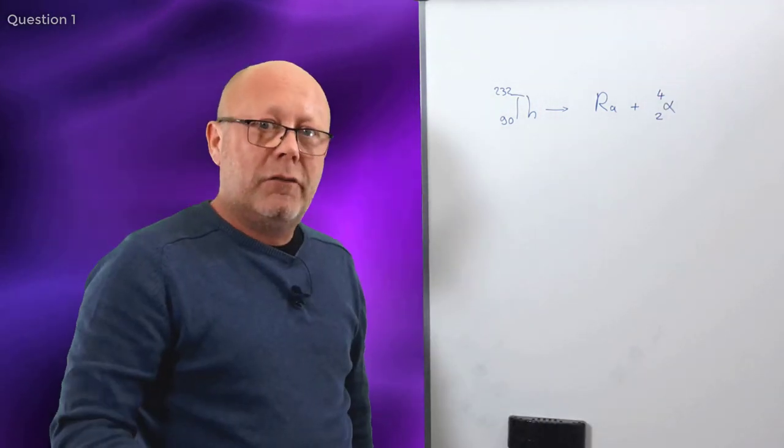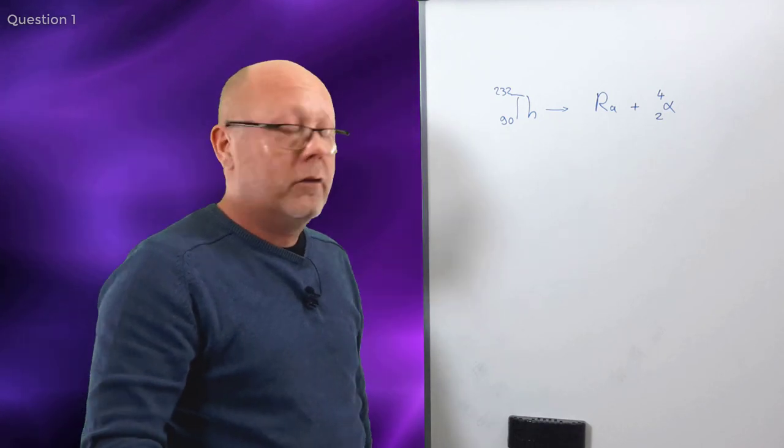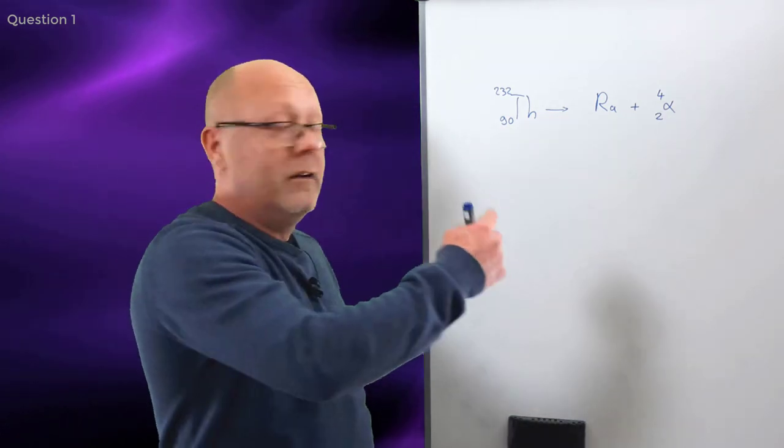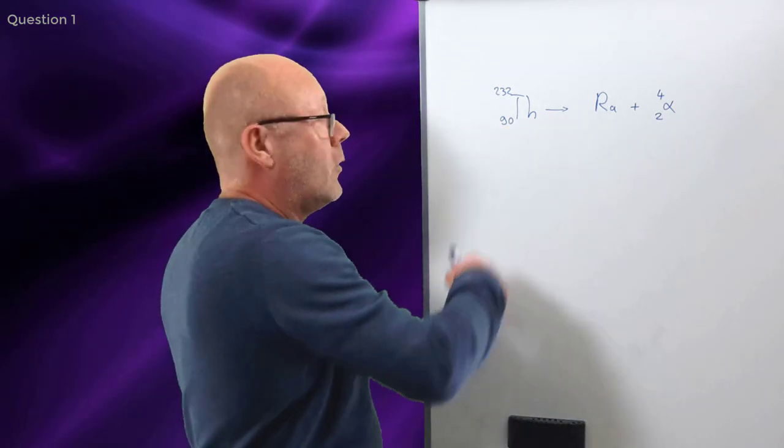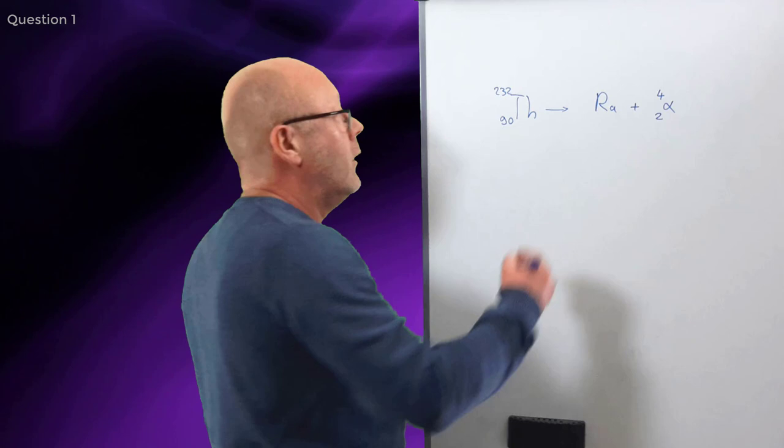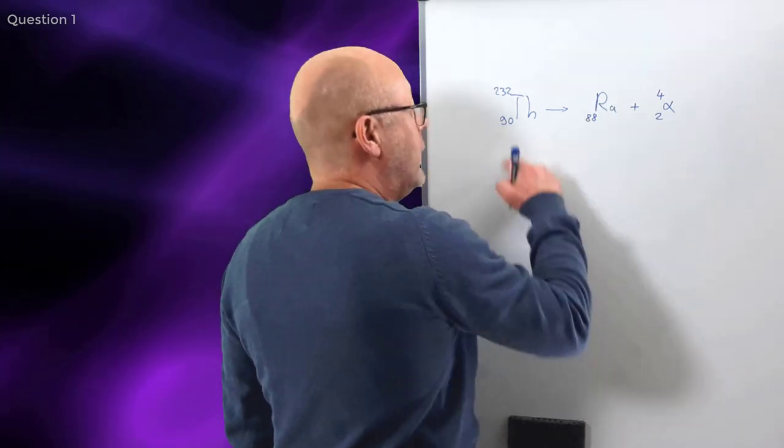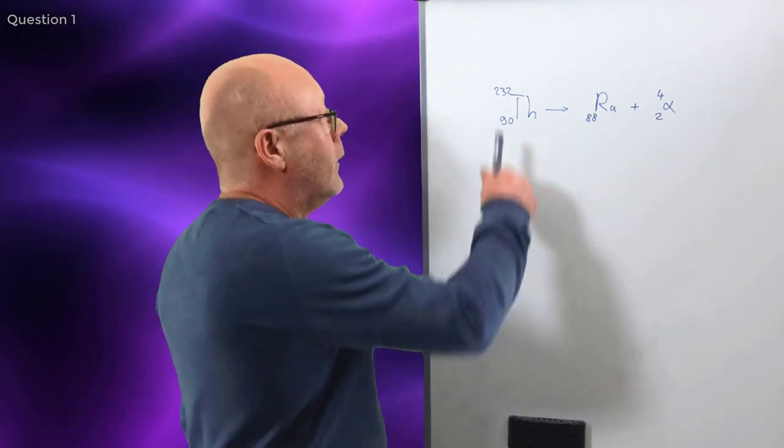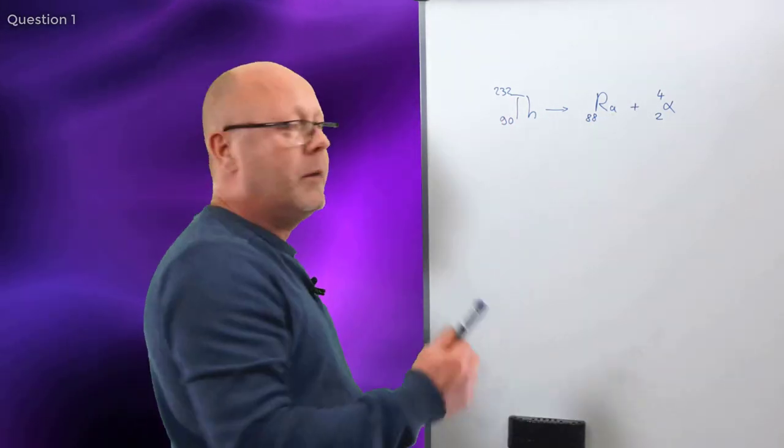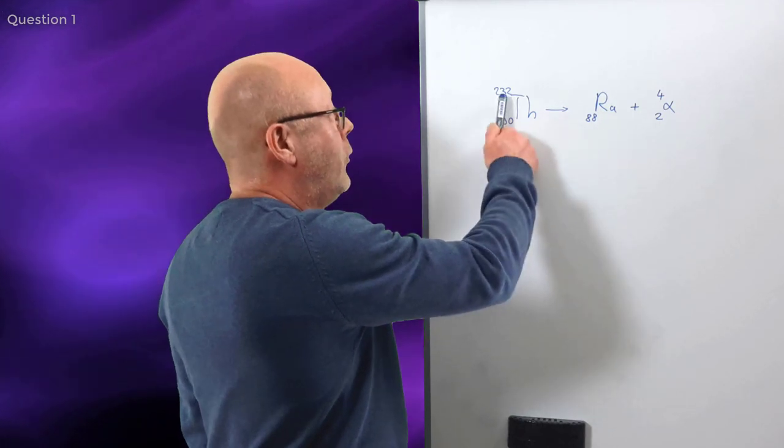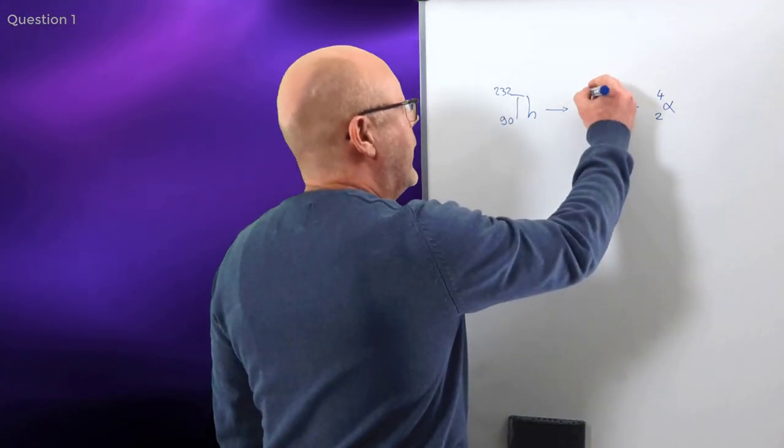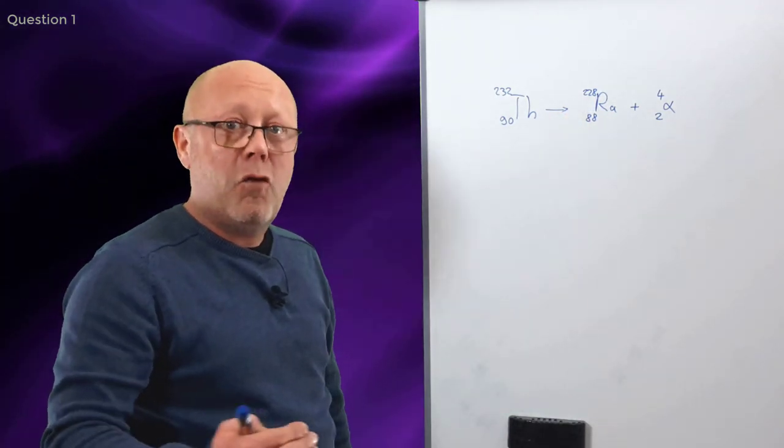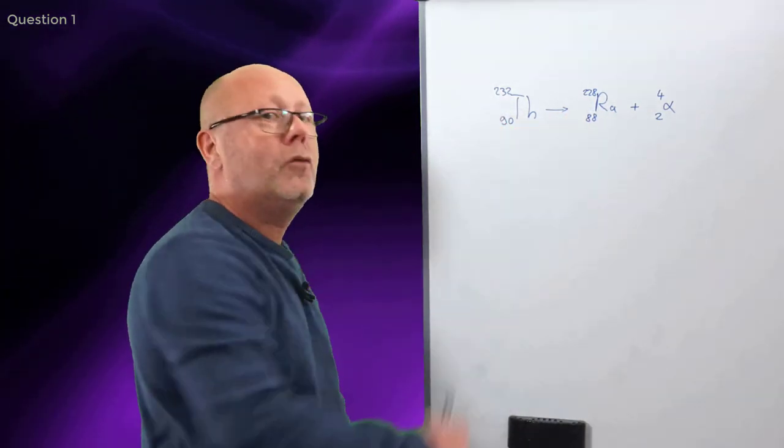These decay reactions need to conserve charge and number of nucleons. So, you see that the charge here, we've got 90 charges on the thorium, because we have 90 protons in the nucleus. The radium can only have 88. Yeah, the nucleus lost two via the alpha decay. And here, the number of nucleons need to be conserved through the reaction. So, to get 232 from four, you need 228. So, this is radium-228, which is the isotope formed by alpha decay of thorium-232.